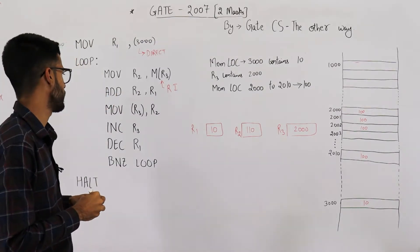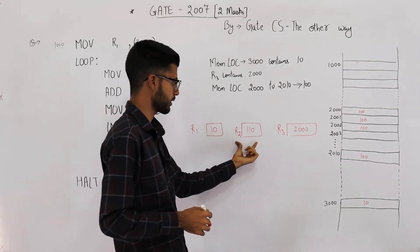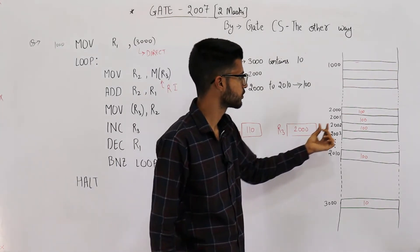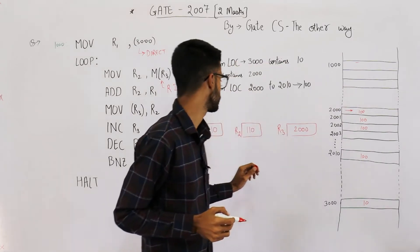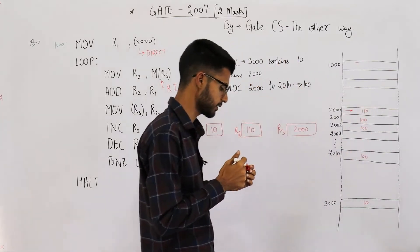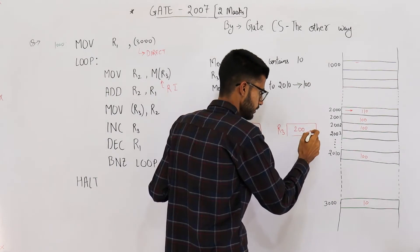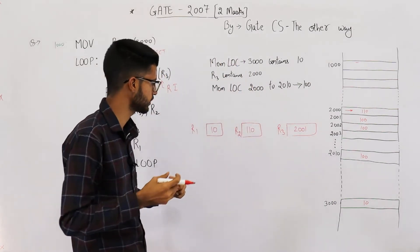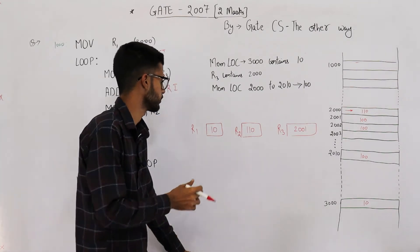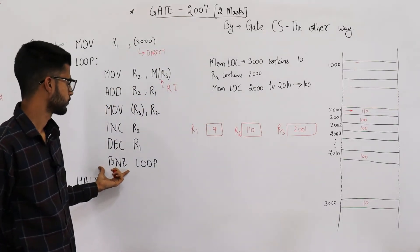Then MOV [r3], r2 means you save the value in r2 into the memory address pointed to by r3. r2 contains 110 and r3 points to address 2000, so memory location 2000 is updated from 100 to 110. Next, INC r3 makes it 2001, and DEC r1 makes it 9.